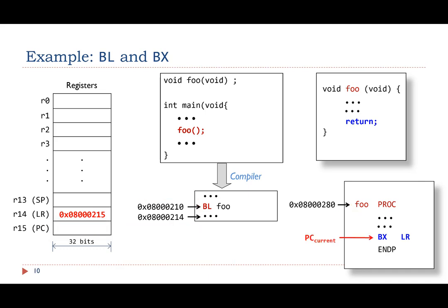When the subroutine foo returns, it executes the instruction BX LR. This instruction will copy the value of LR to PC. Therefore, the value of PC becomes 0x800214.